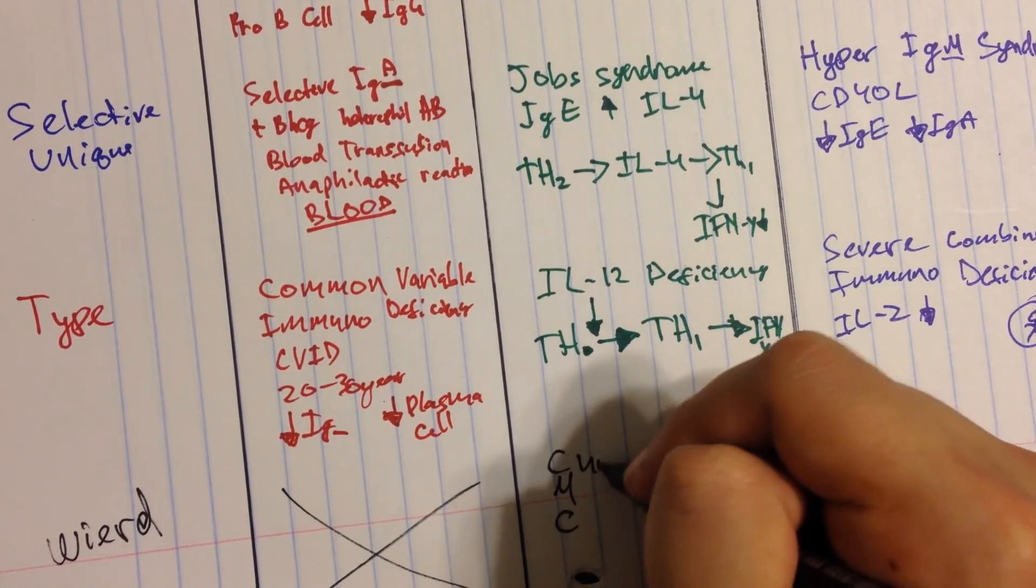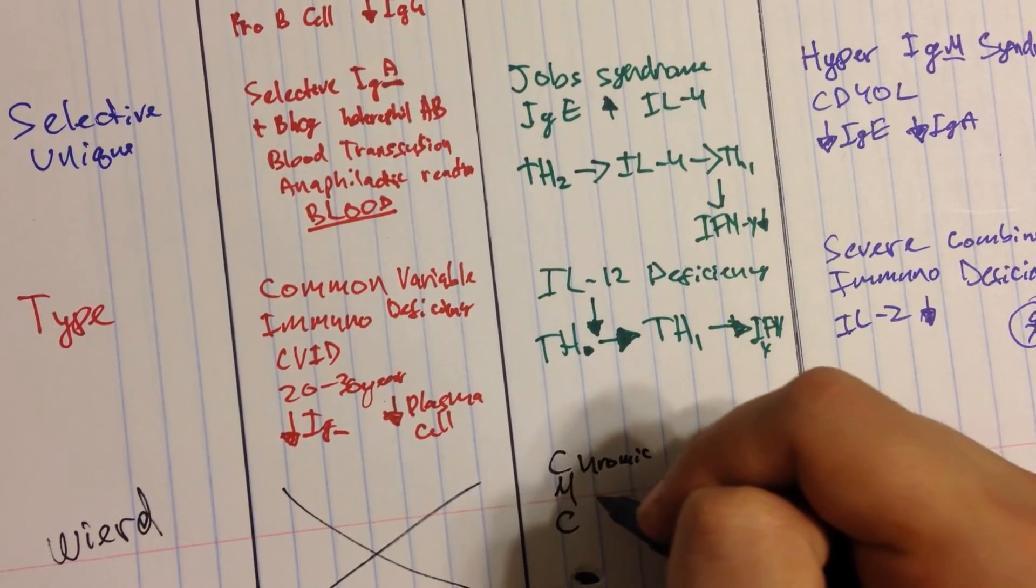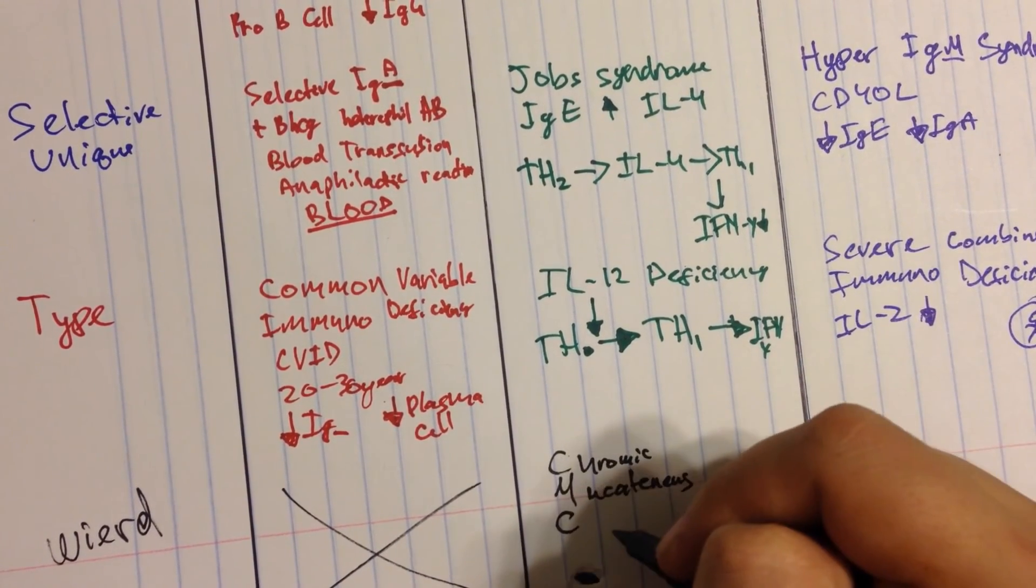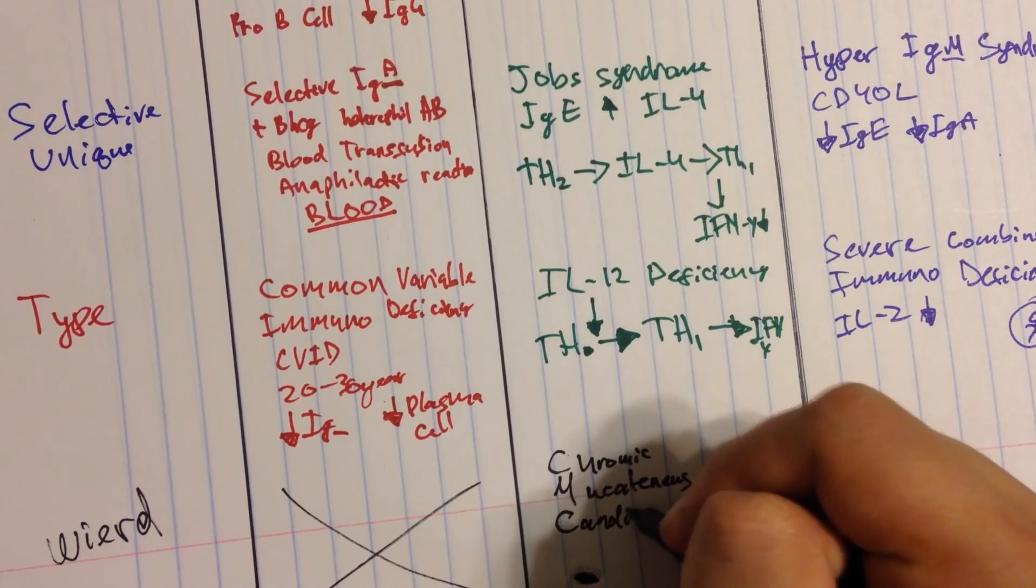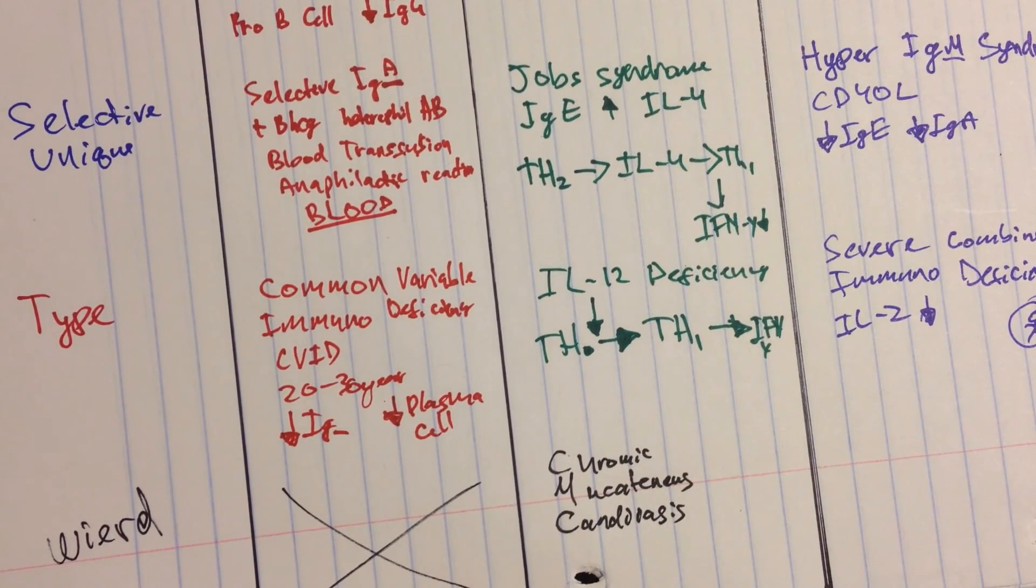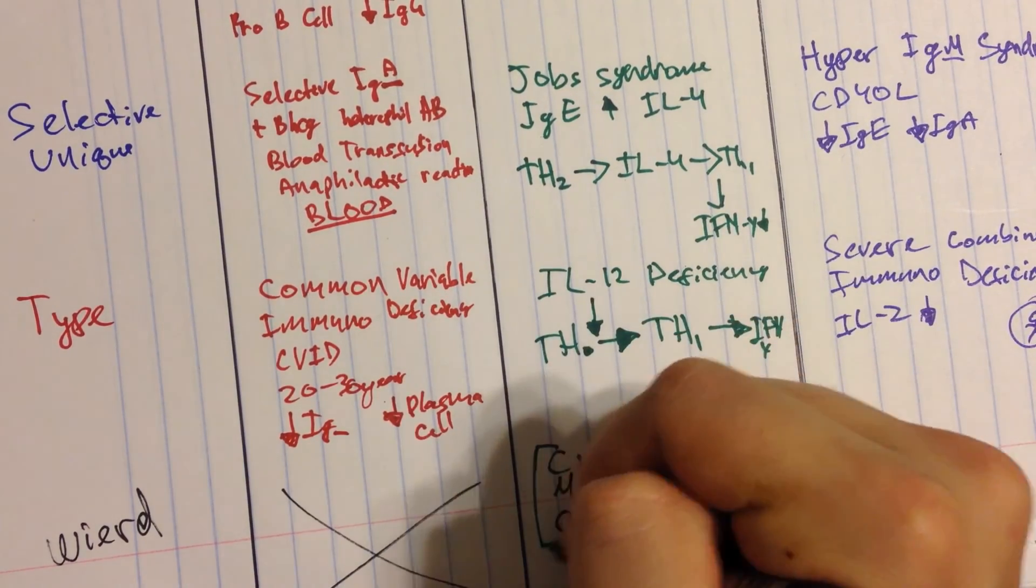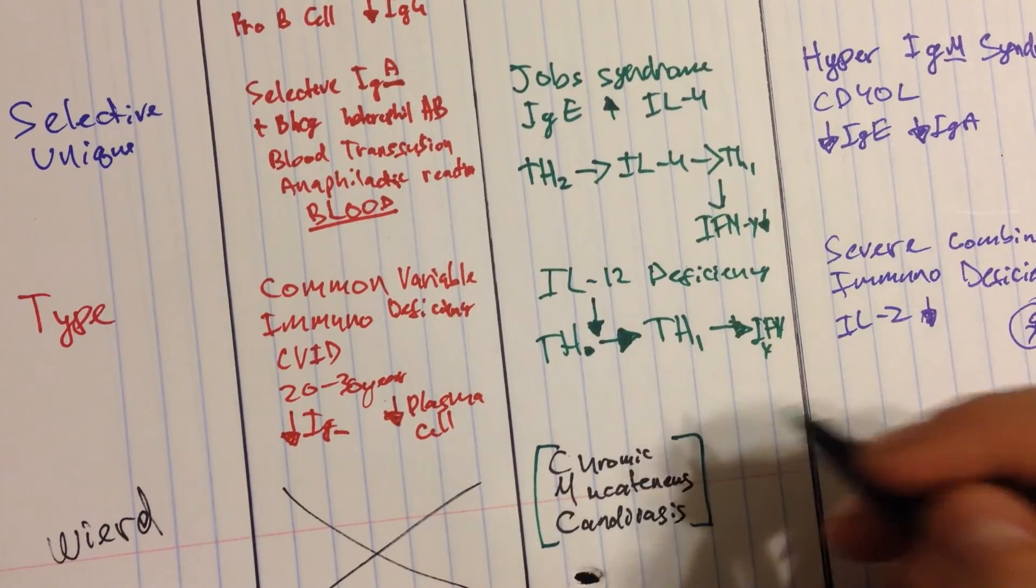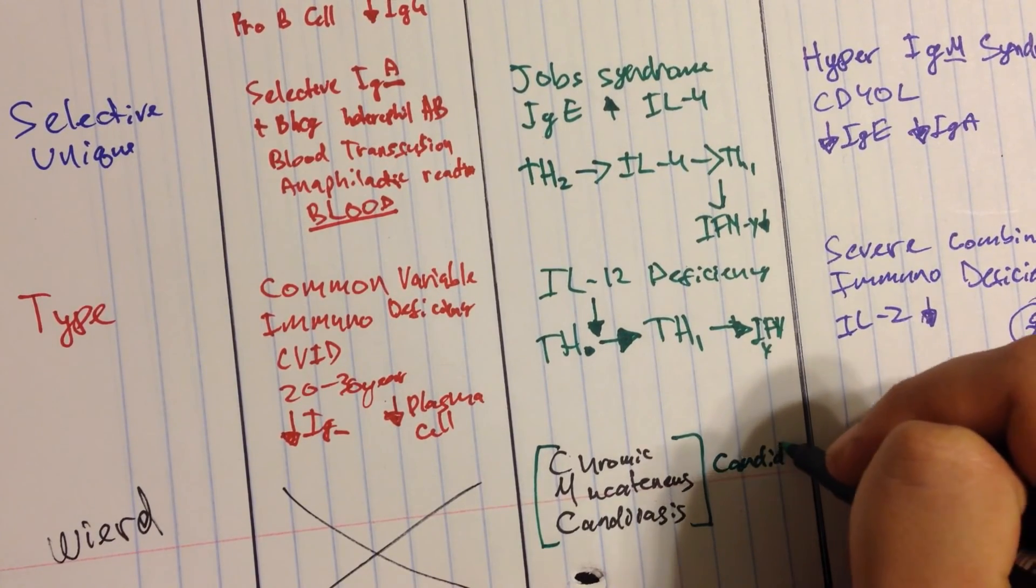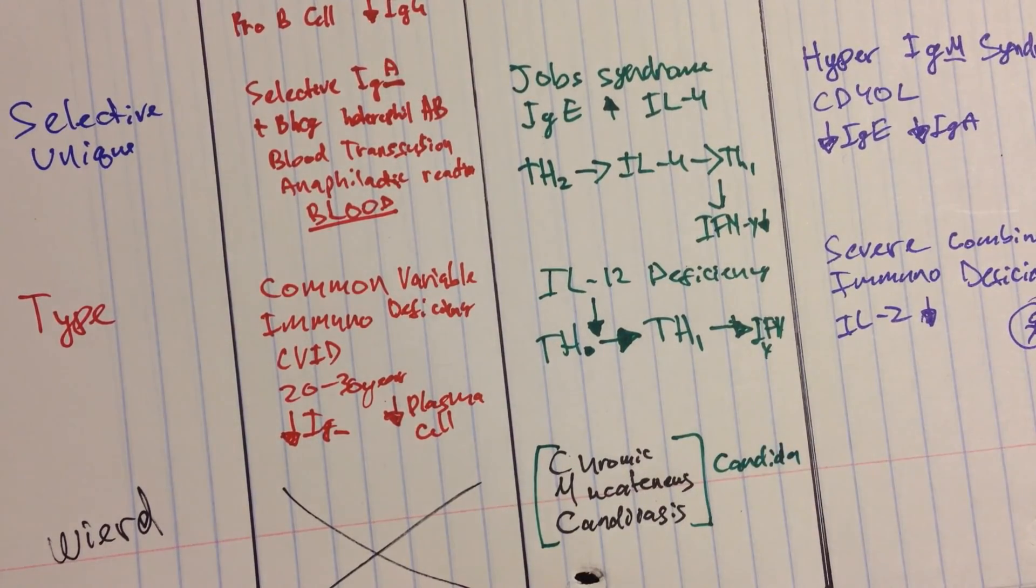And I'm writing this in black. It should be in green because it's in the category of B and T cells. But it's really a weird one. And really, if you see a Candida infection, it's usually going to be associated with a B and a T cell problem. And I want you to think about this.